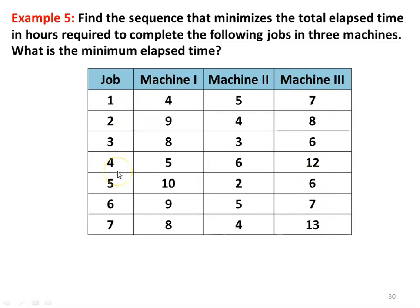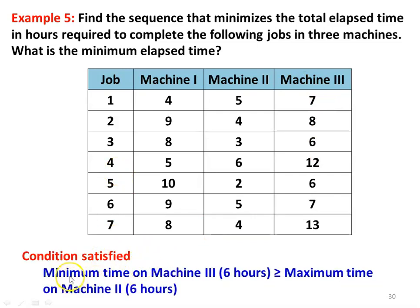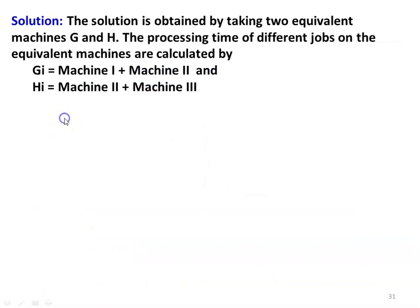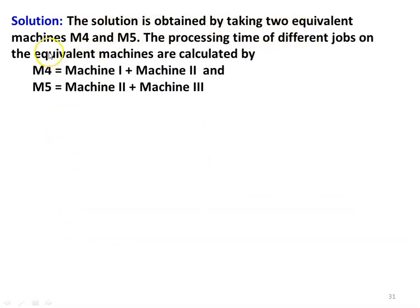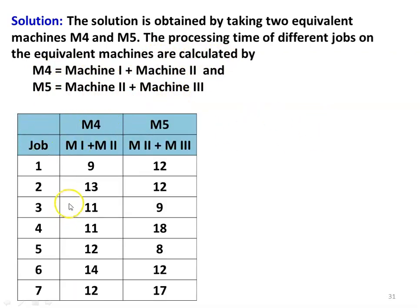Before converting to equivalent machines, we check the condition. Minimum time on machine 3 is 6 hours, which is greater than or equal to maximum time on machine 2, which is 6 hours. The condition is satisfied and we can proceed. The solution is obtained by taking two equivalent machines M4 and M5: M4i = M1i + M2i and M5i = M2i + M3i.